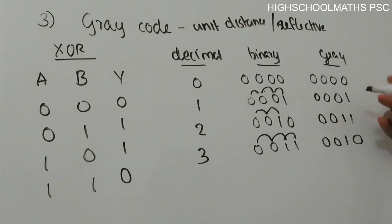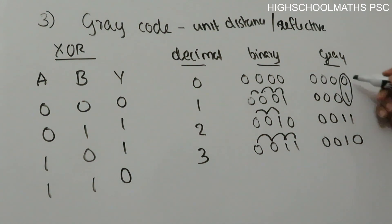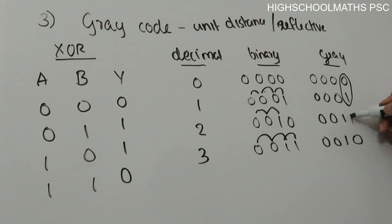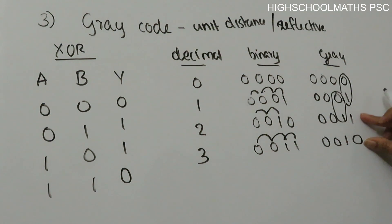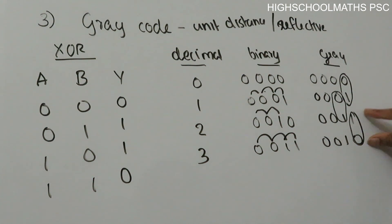In Gray code, only one bit changes between each successive code — this is why it is called the Unit Distance code. Each transition from one code to the next involves exactly one bit change. So the binary code that progresses with only one bit change between two successive codes is Gray code.